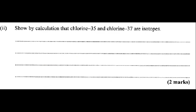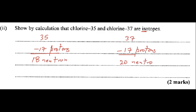Part two of B: show by calculation that chlorine-35 and chlorine-37 are isotopes. The mass number of chlorine-35 is 35 minus 17 protons, giving 18 neutrons. For chlorine-37, it would be 37 minus 17 protons, giving 20 neutrons. They're isotopes because they have the same atomic number but different neutron numbers. That's two marks.